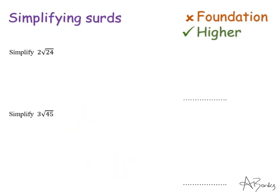Here's two more examples where it just gets slightly more complicated because this time there's a number in front of the root. But I'm just going to ignore it. I'm just going to leave it at the front and deal with it at the end. So this first one says simplify 2 root 24.